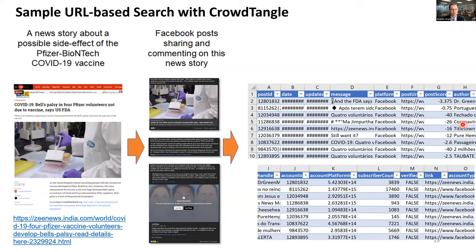An important privacy note: when you export posts from CrowdTangle, if a post was made within a public group, the author shown will be the group name — not the actual Facebook user who posted the message. Also, CrowdTangle does not export any comments made in response to posts, so you cannot have conversational thread data as you would with Reddit or Twitter datasets.